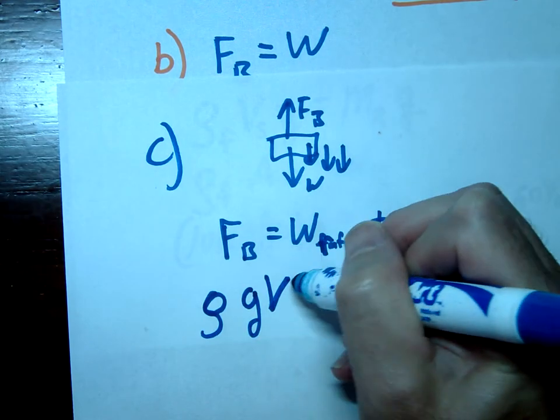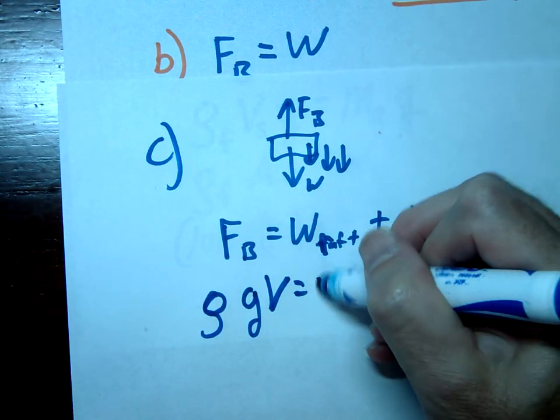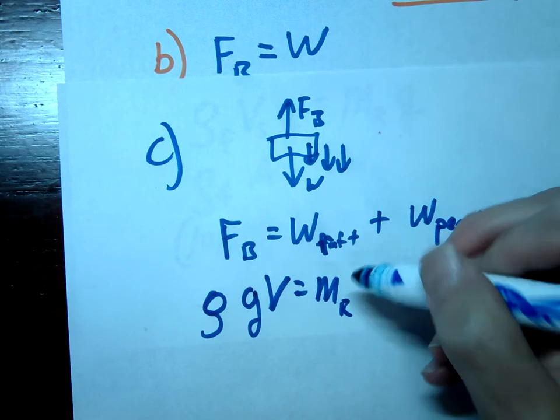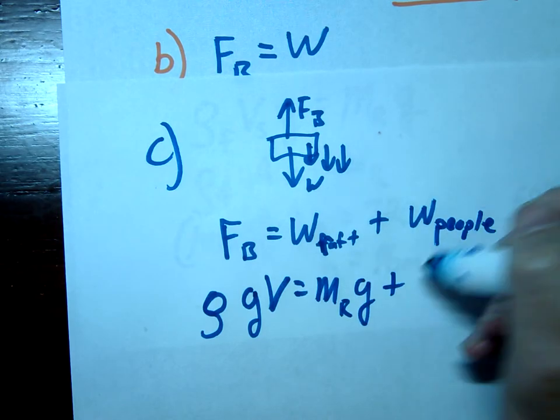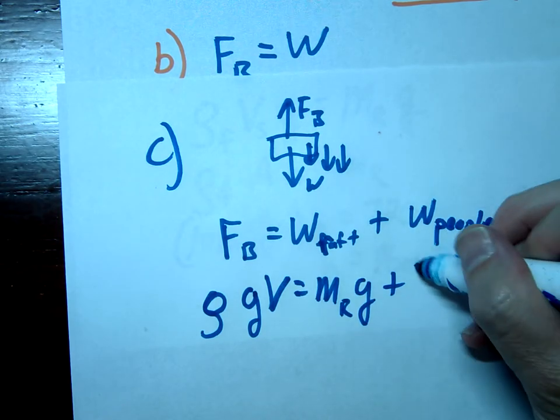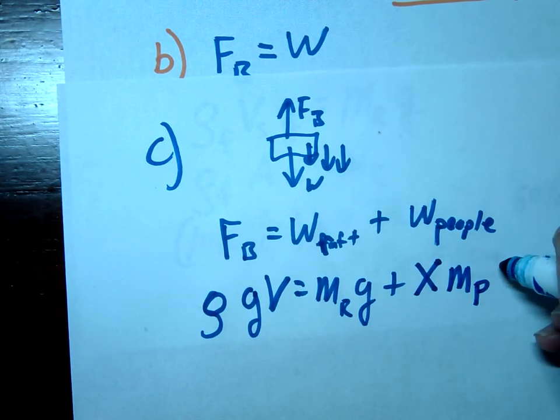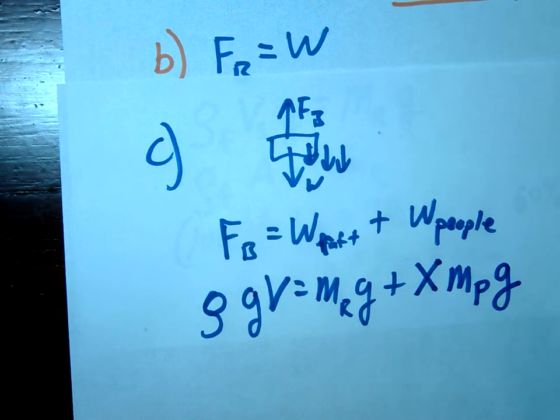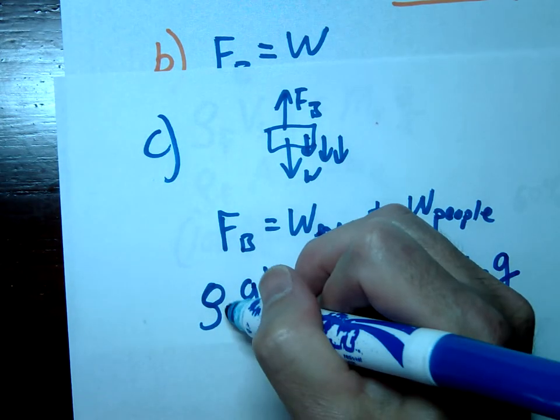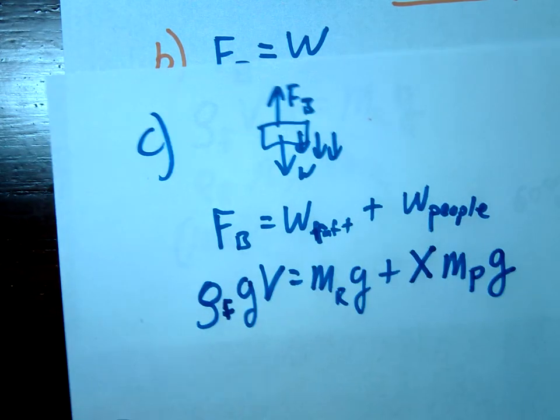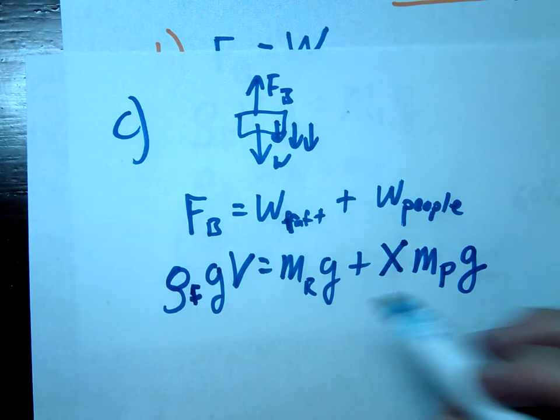The weight of the raft would be the mass of the raft times g plus the weight of the people. So we don't know how many people so just write x number of people times the mass times little g. Don't forget this is the density of the fluid of water in this case.